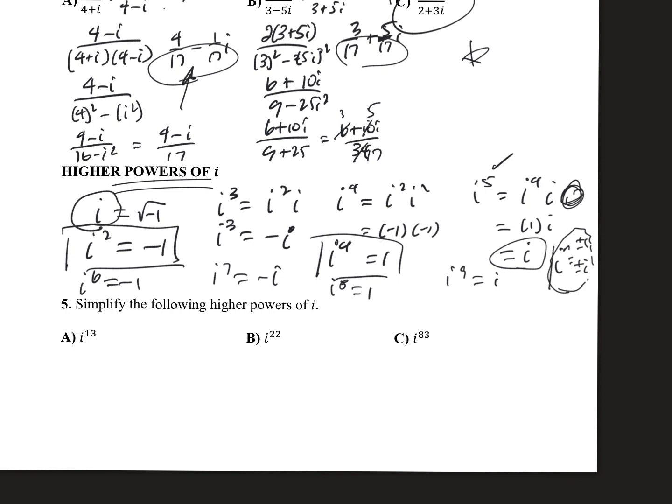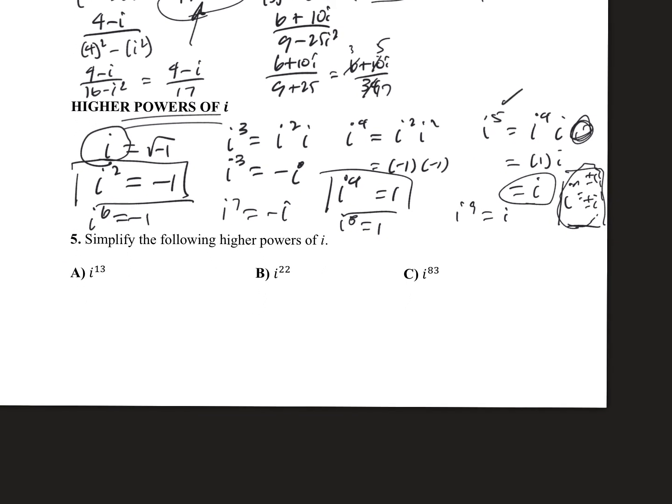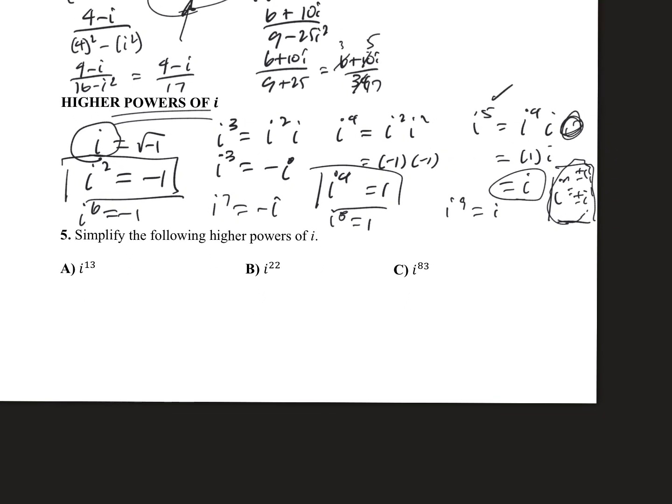Some problems you might see in the future is, how do we do i to the 13th? Well, what I like to do is break it down into things that we know. i to the 13th is basically i to the fourth, i to the fourth, i to the fourth times i. 4, 4, 4, and 1. So all these are 1. So we have 1 times 1 times 1 times i. So basically, i to the 13th is i.